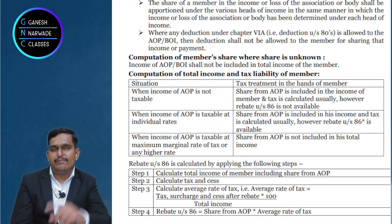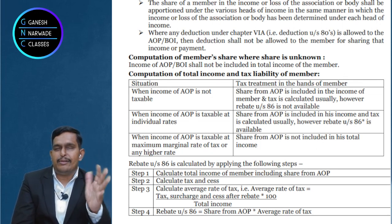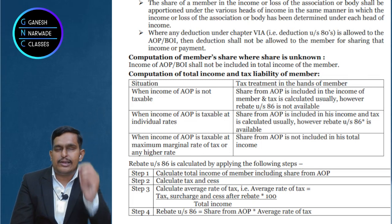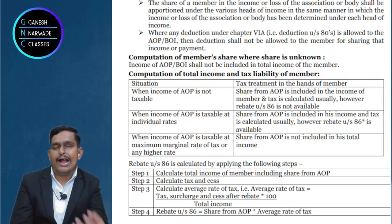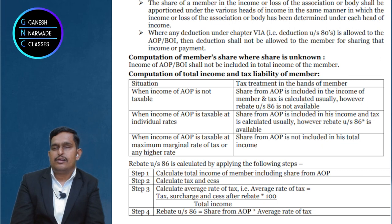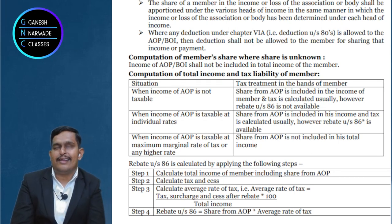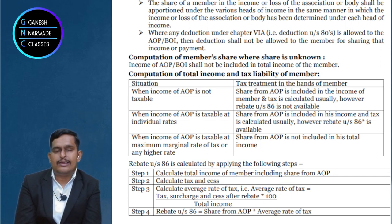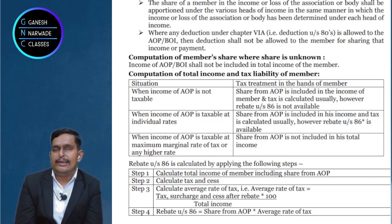Moreover, how did we come to know about AOP's income? By adding salary, remuneration, interest, commission, bonus paid to members — these became part of the income of AOP. Even though it went to members' accounts, when we compute income for income tax purposes, these are disallowed and added back. So now, when AOP is paying tax at maximum marginal rate, taxing it again in the members' hands would be unfair. That is why when share is unknown, only personal income of members should be taxed — AOP's share of income in any form will be ignored.